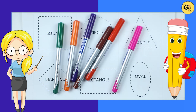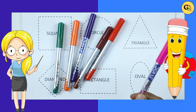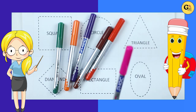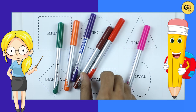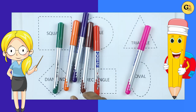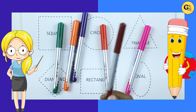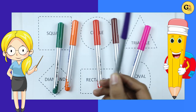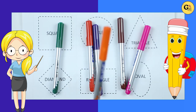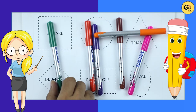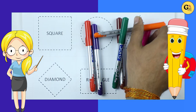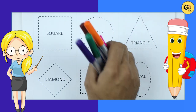We learn shapes with some colors. It's pink color, red color, brown color, purple color, orange color, green color. So, let's start.